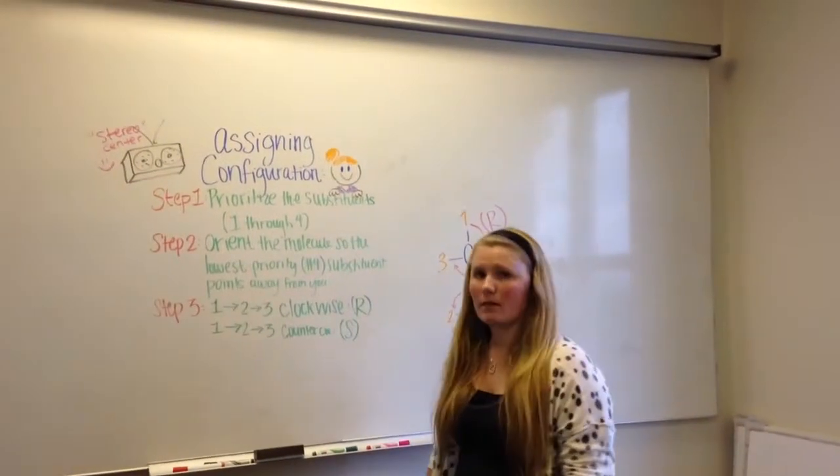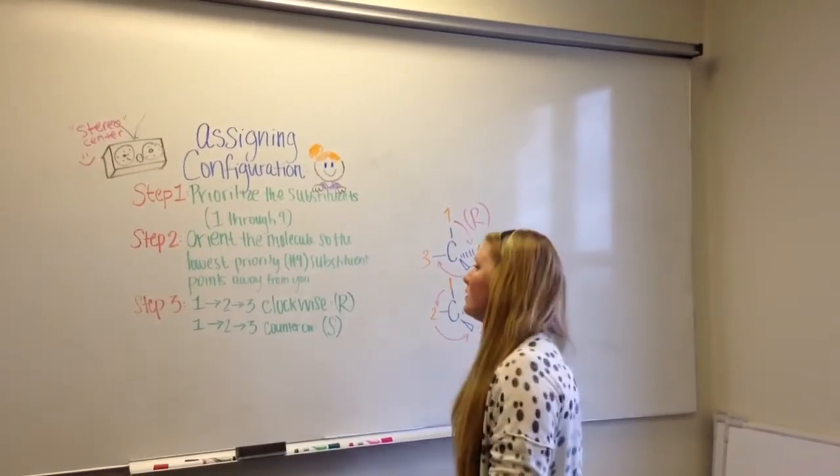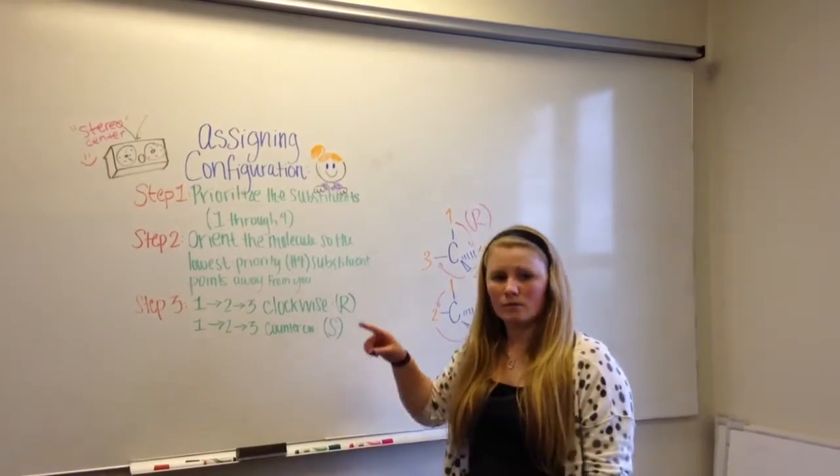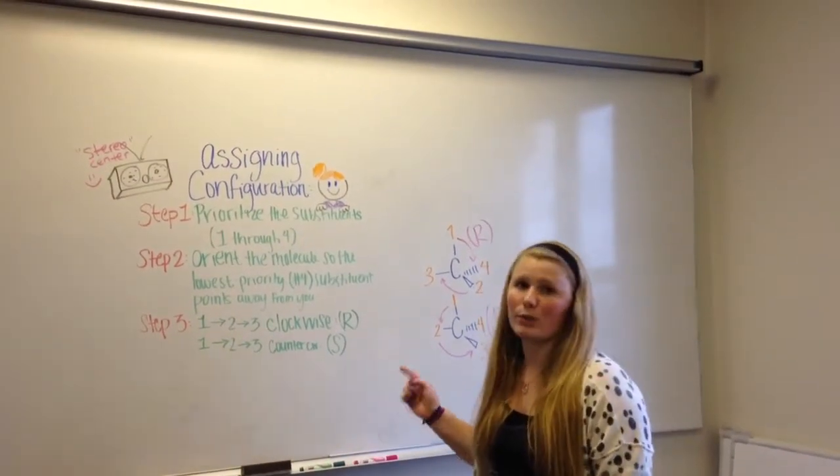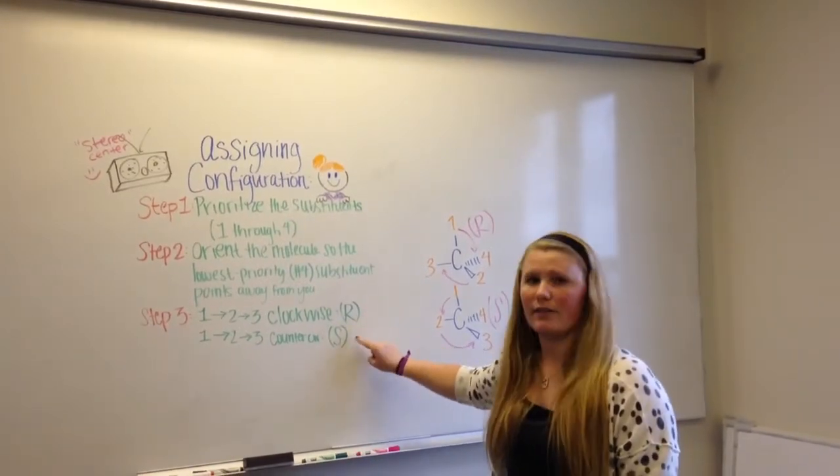Step 2 is to orient the molecule so the lowest priority, or number 4 substituent, is facing away from you. Step 3 is to look at the substituents 1, 2, 3 and see if it's clockwise, it'll be R configuration, and if it's counterclockwise it's S.